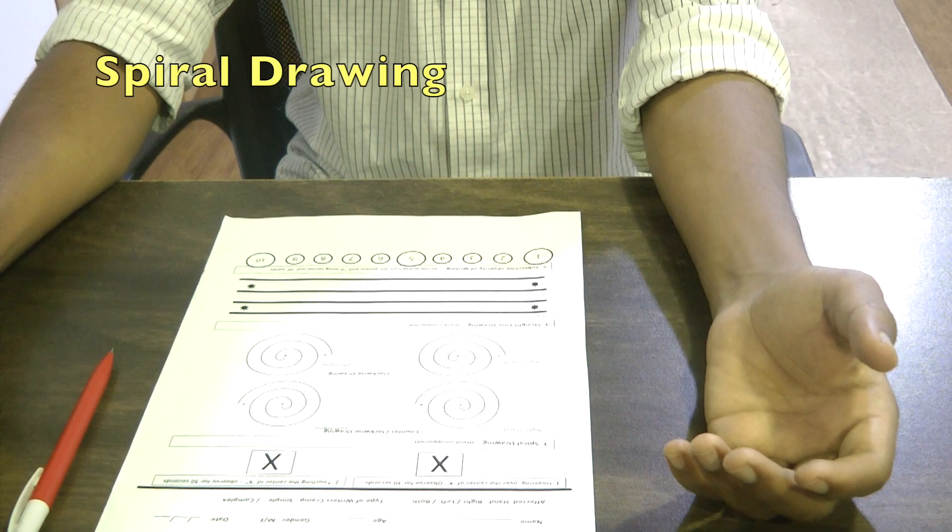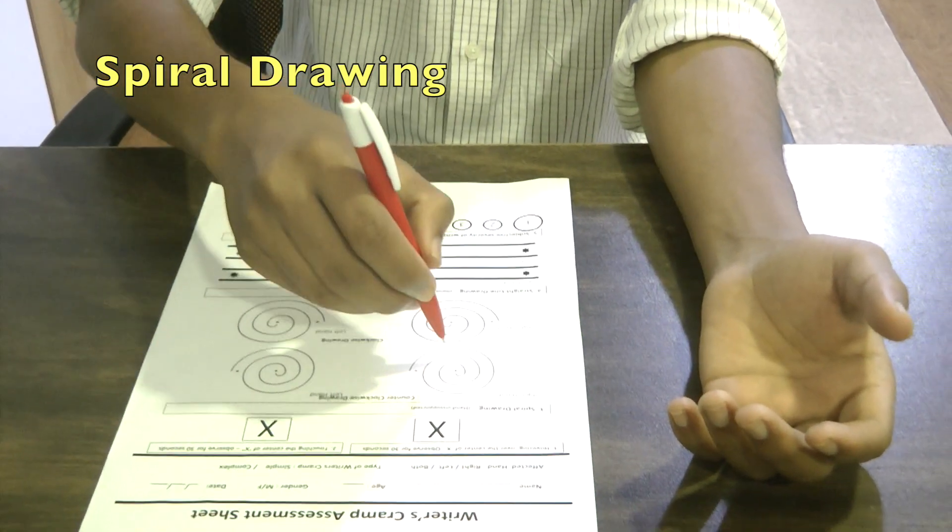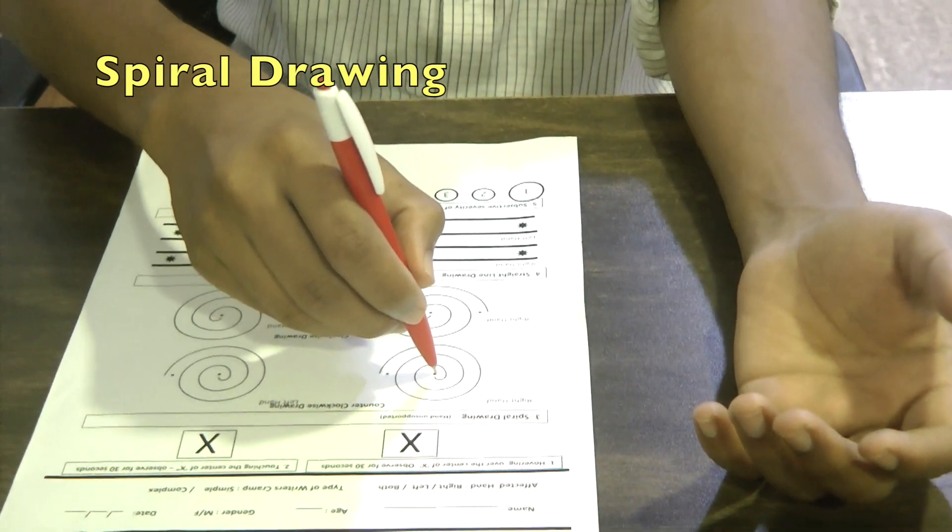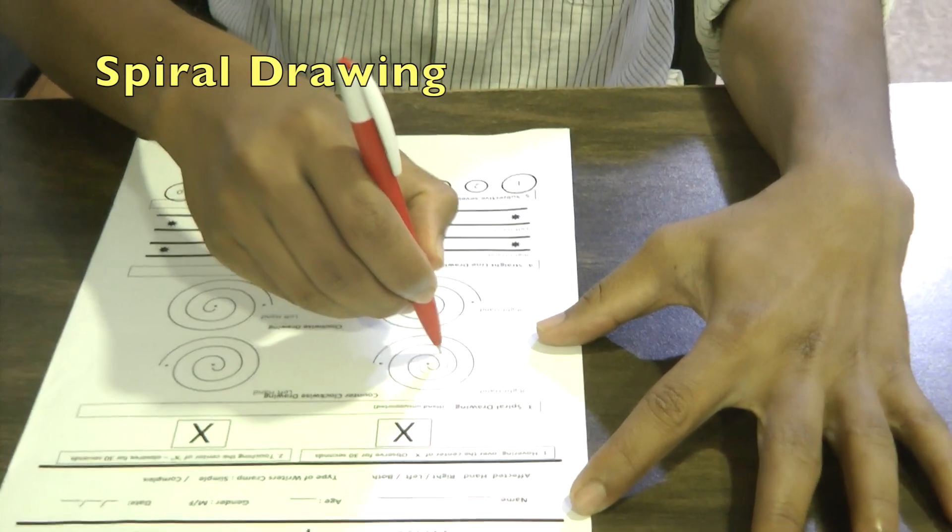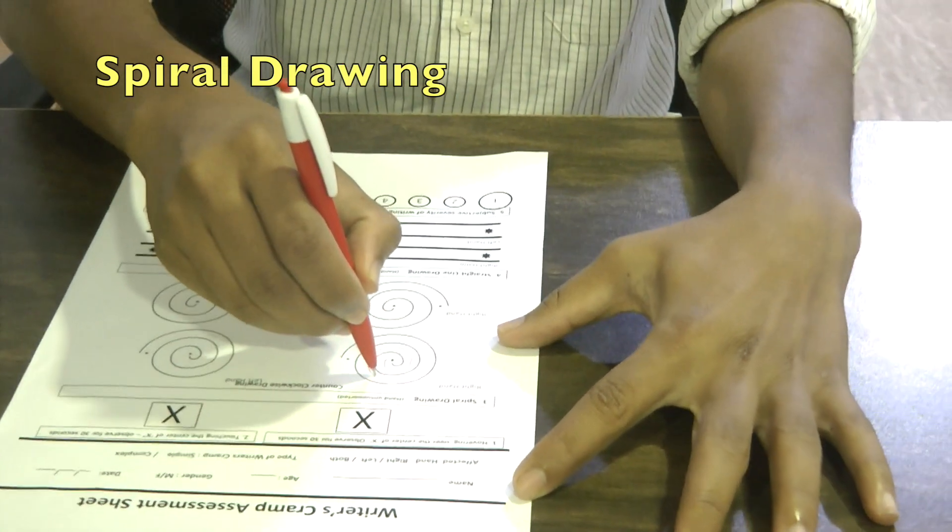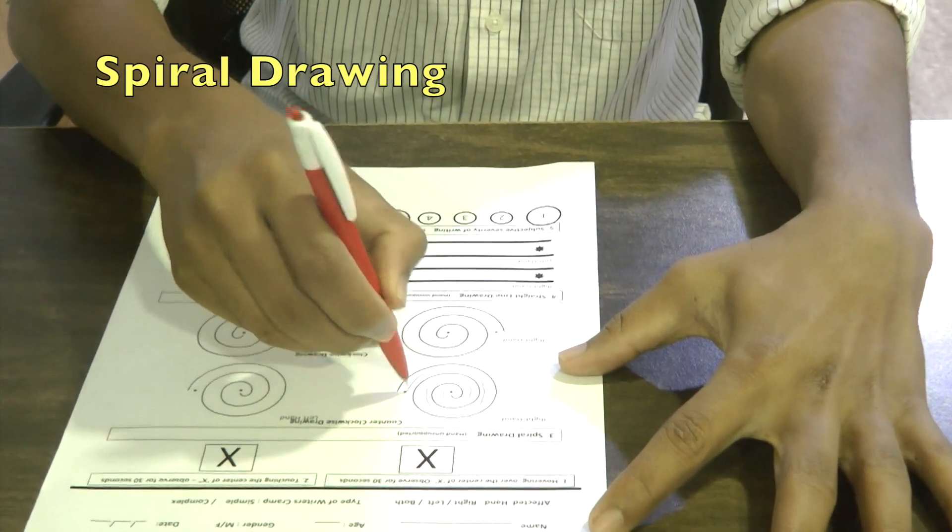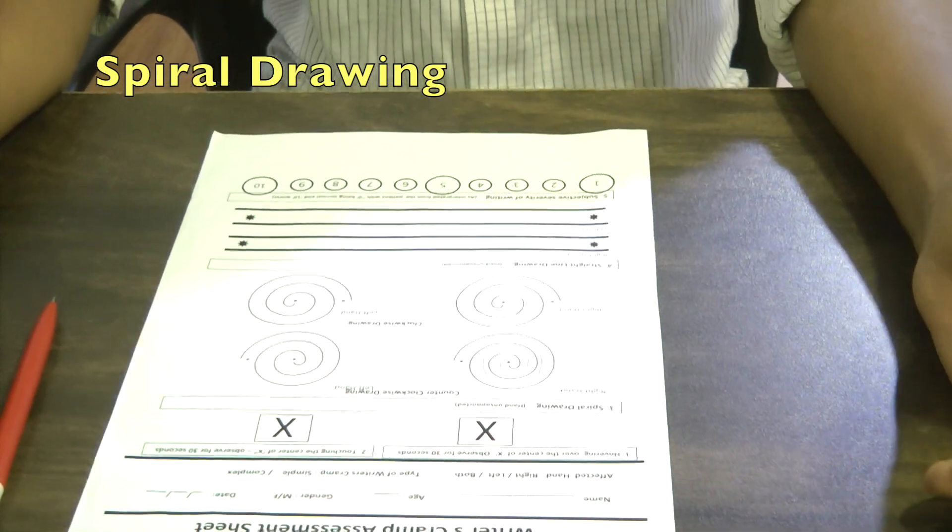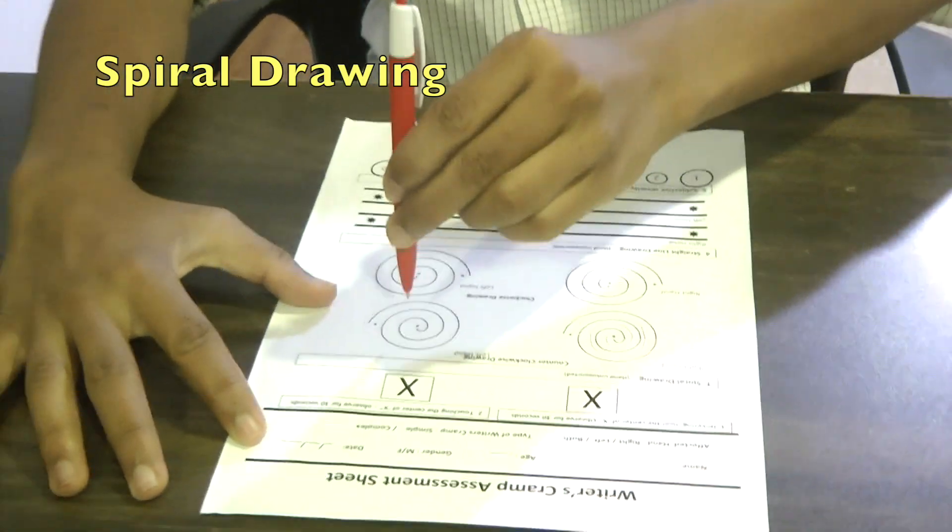Step 2 would involve asking the subject to draw spirals with unsupported hands and forearms, both in clockwise direction and anticlockwise direction, with the right and the left hand separately. Spiral drawings help us to look for any dystonic movements in the primary position, especially involving the wrist and fingers.